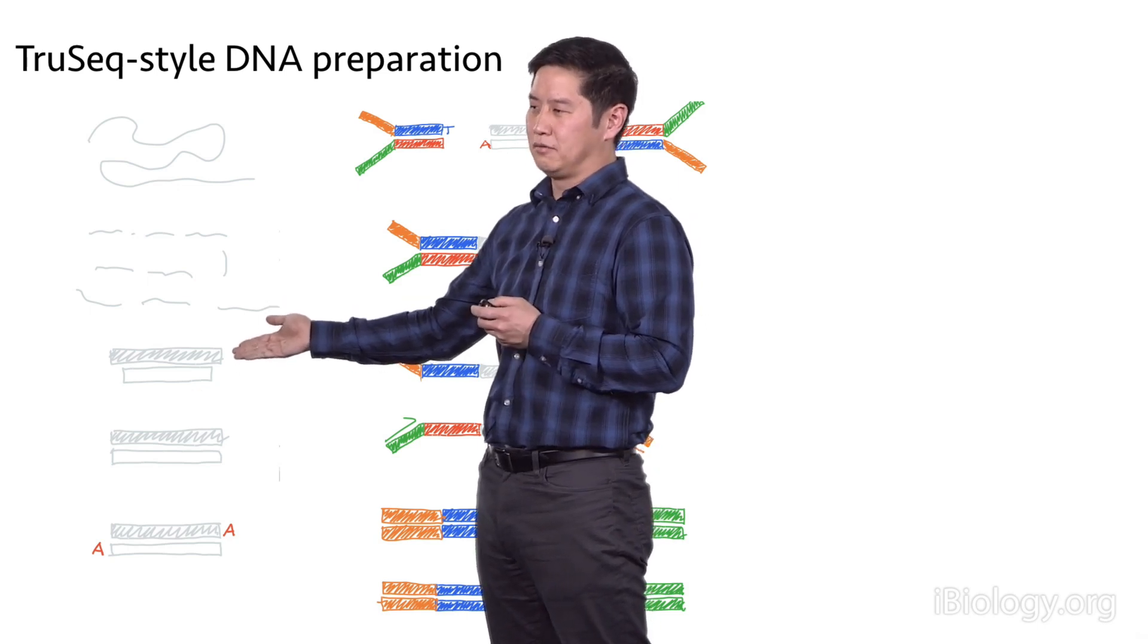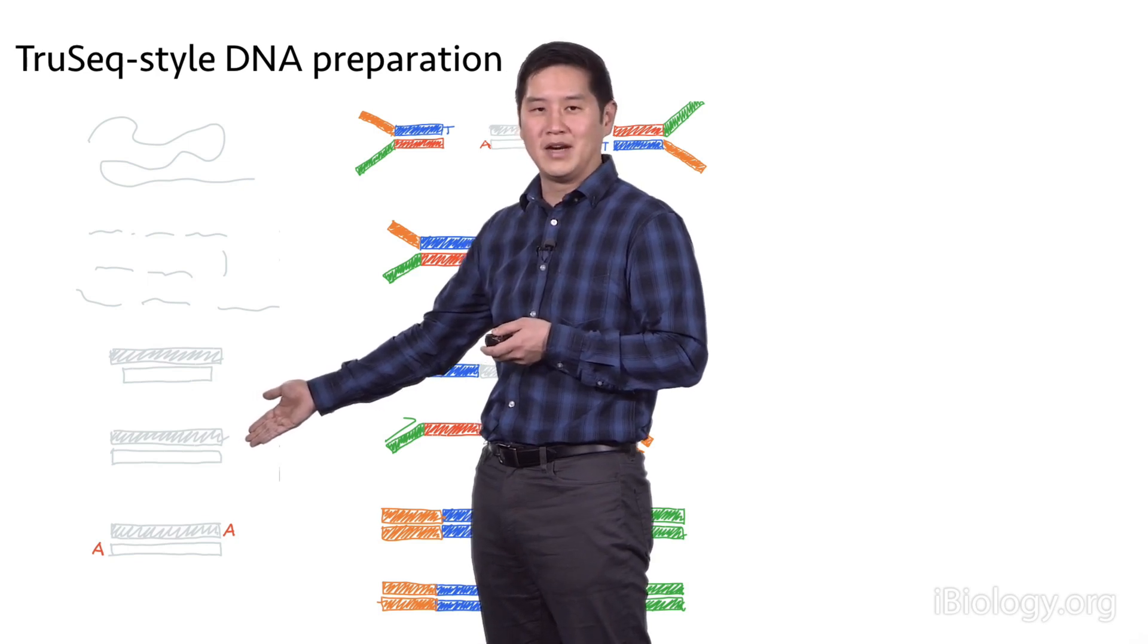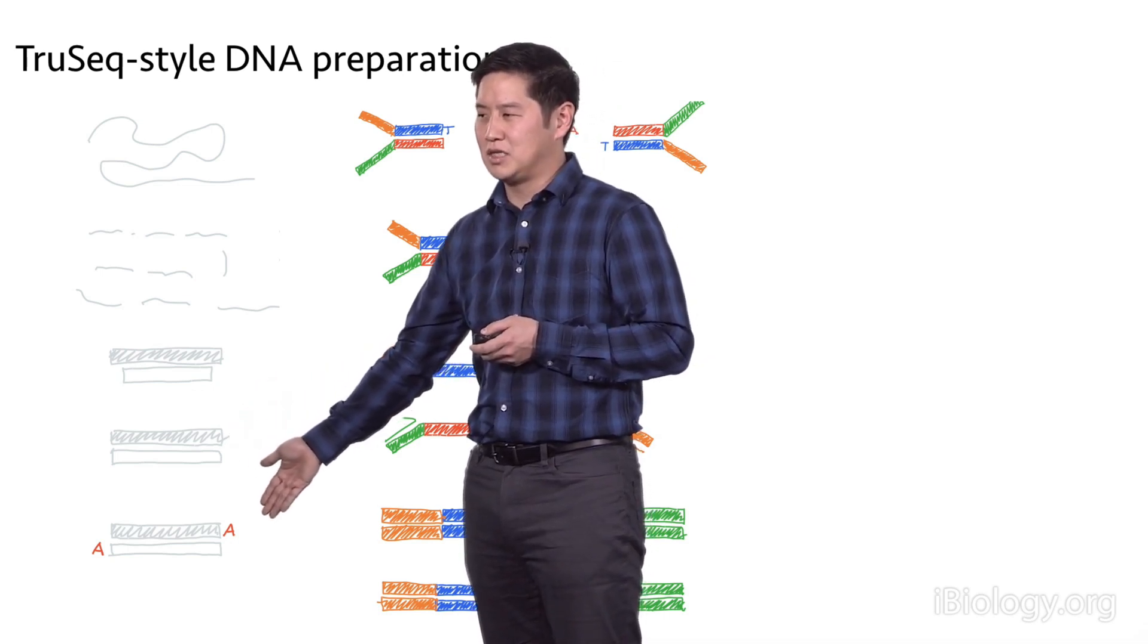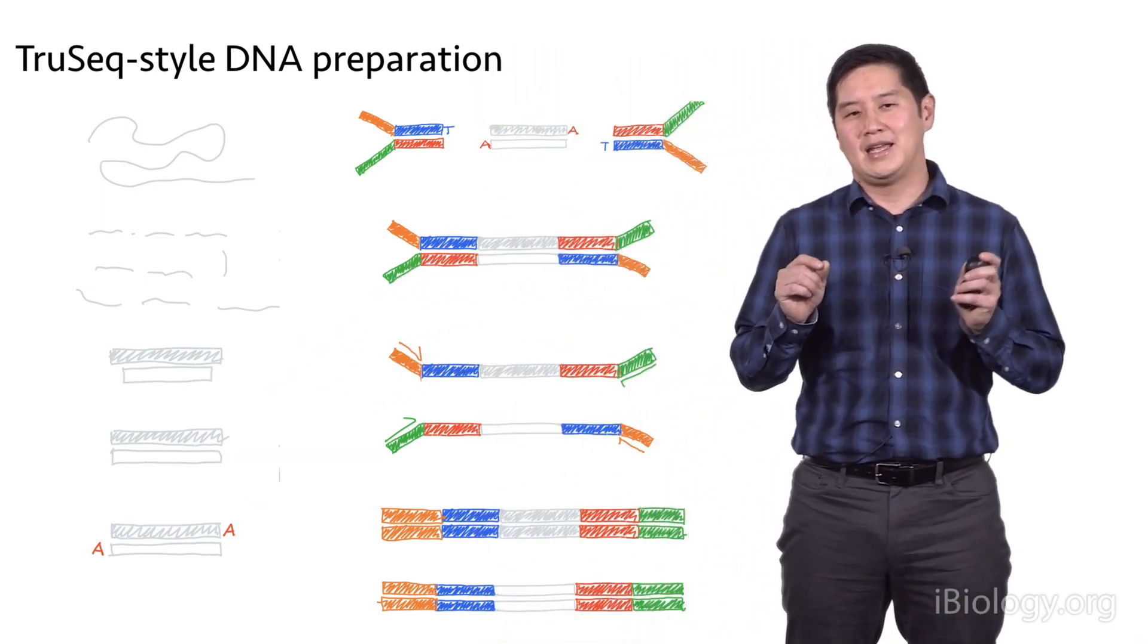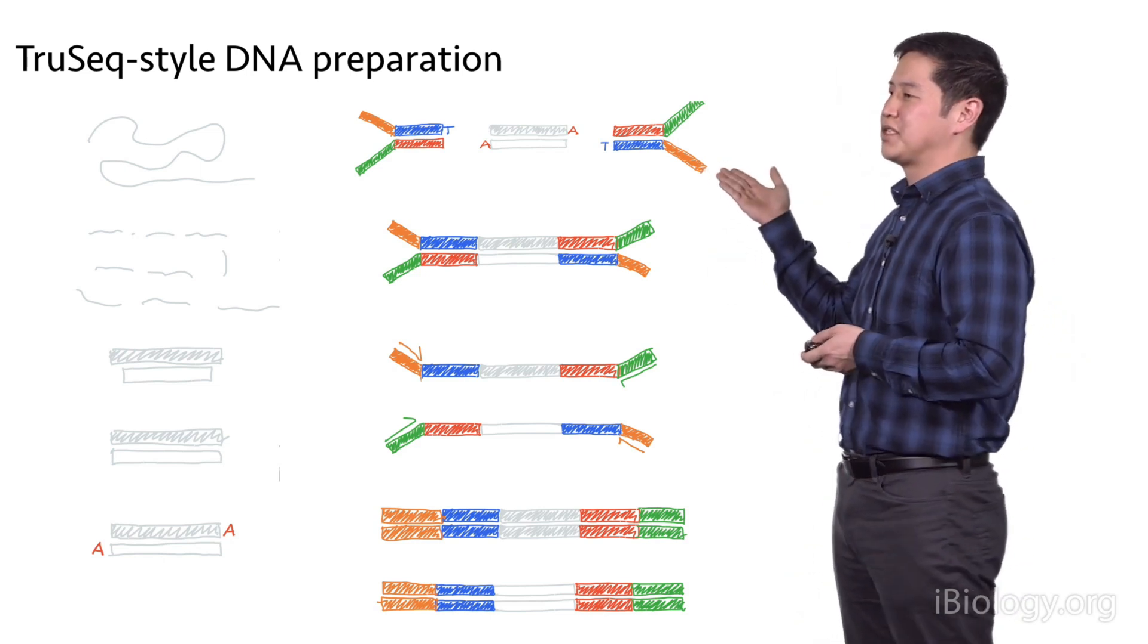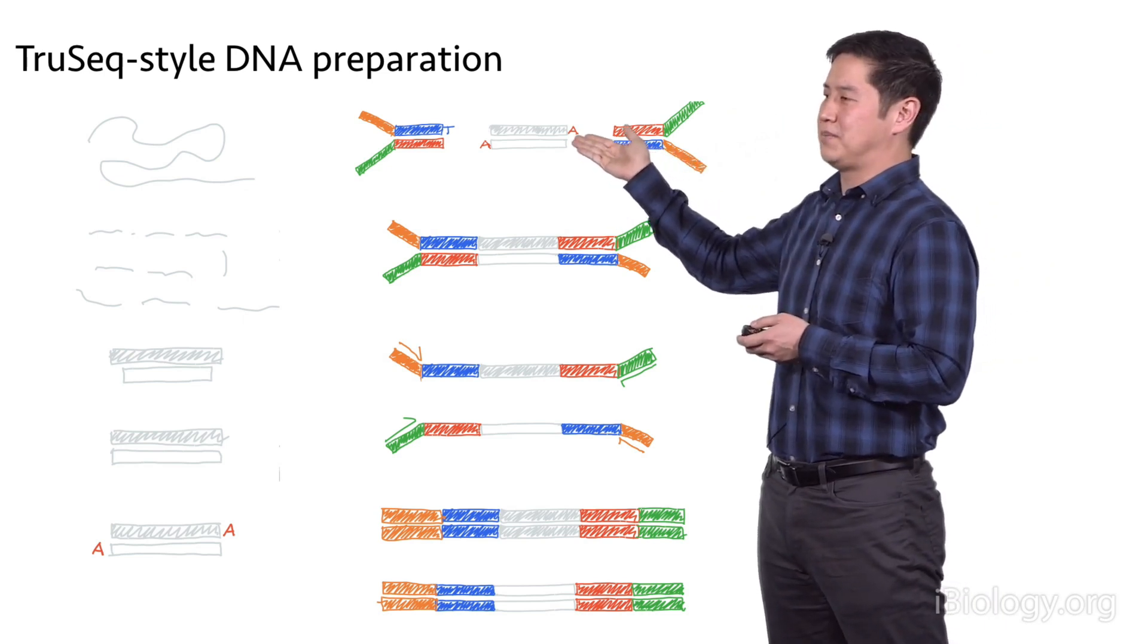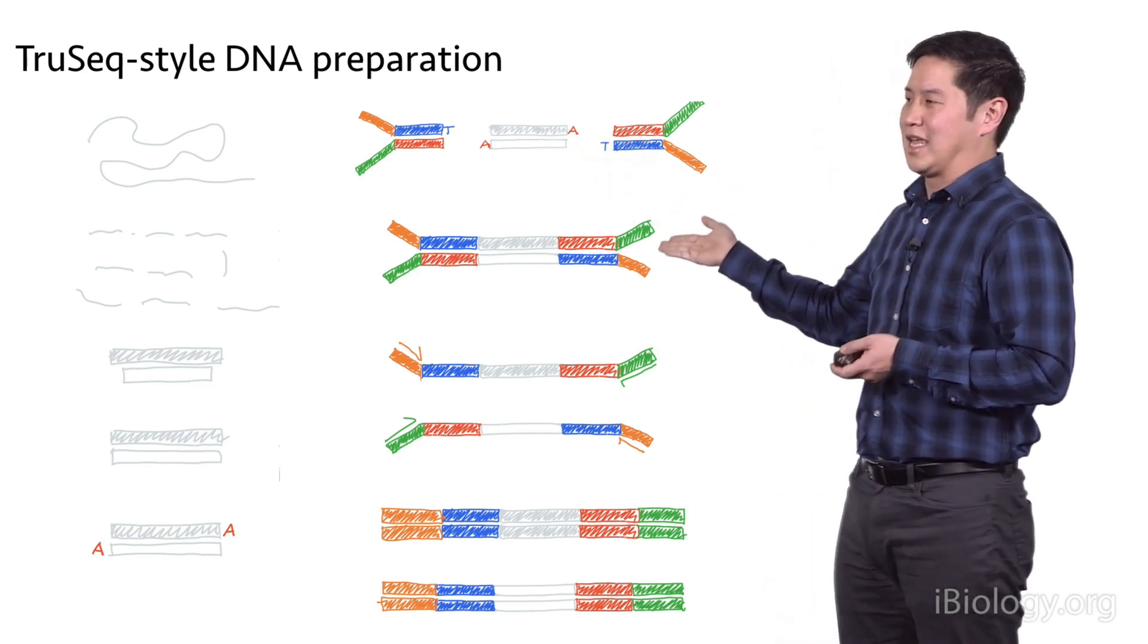The first step to repair those ends is to blunt the ends using a mixture of different enzymes. This generates double-stranded DNA with no overhangs. The next step is to add a single A base so you have a single A overhang on your DNA inserts. This allows the next step, which is ligation of the adapters. The adapters are these colored molecules, and they have a T overhang that allows it to base pair with the A overhangs on your inserts. This undergoes a ligation reaction.